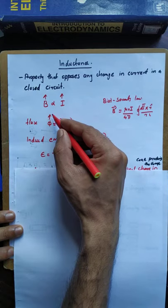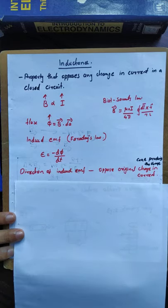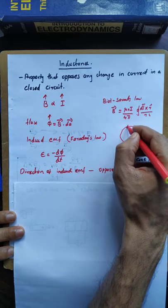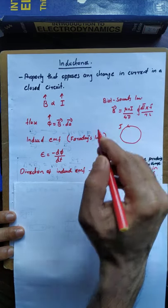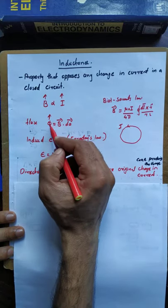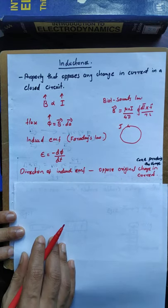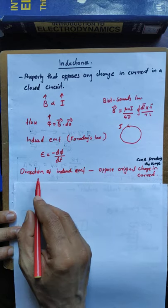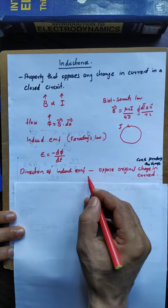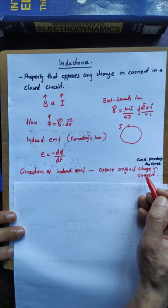When flux changes, an induced EMF is produced. The direction of the induced EMF is such as to oppose the original cause that produces the change in current. The induced EMF will flow in such a direction so as to oppose the original cause that produces the change in current.